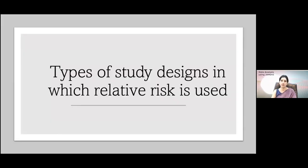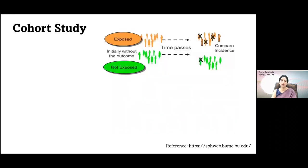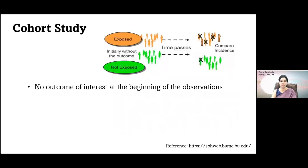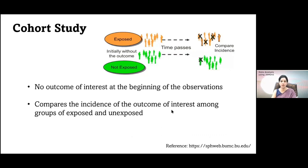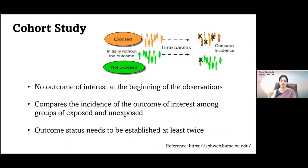In which type of study design do we use this? In a cohort study, you start with the exposed and non-exposed group. As time passes, some people develop the disease in the exposed group and some in the non-exposed group. There is no outcome of interest at the beginning of observation, but as we move ahead there are some observations. We compare the incidence of outcome in these two groups of exposed and non-exposed.